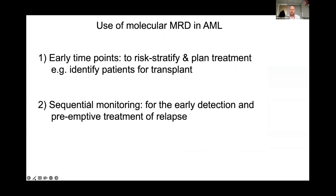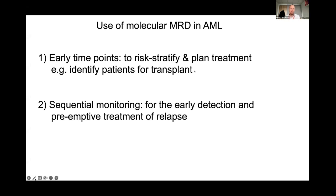Broadly, there are two ways that molecular MRD measurements are used in AML. The first is applying these early time points after one or two courses of chemotherapy to try and fine-tune the risk stratification, which will generally be based on cytogenetics and a molecular profile. MRD is fed in to refine that risk stratification — particularly valuable in intermediate risk patients where decisions about transplant in first remission are particularly controversial, and increasingly the MRD at early time points is used to make that decision.